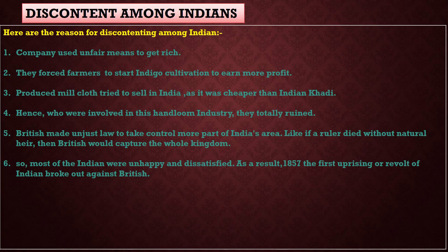Point five, British made unjust laws to gain full control over India. For example, one law stated that if a ruler died without a natural heir or a son, then British would capture the whole kingdom. In this way, many kingdoms were captured, and most Indians were unhappy and dissatisfied. As a result, 100 years after 1757, in 1857, we saw the revolt — the uprising by Indian soldiers.